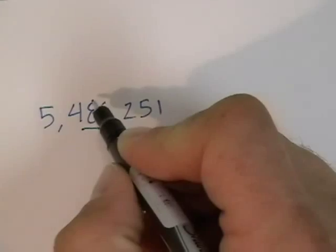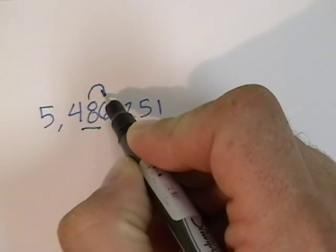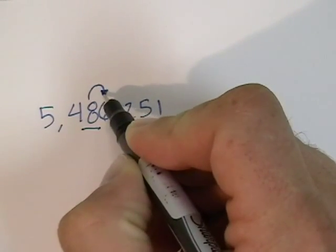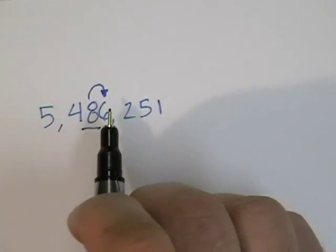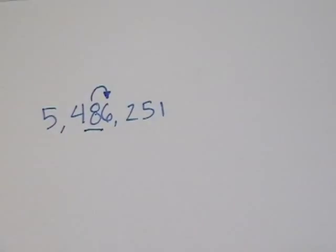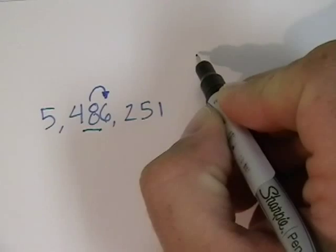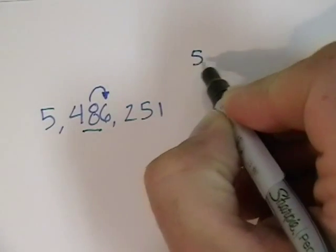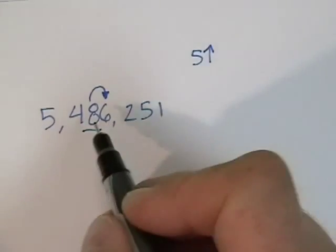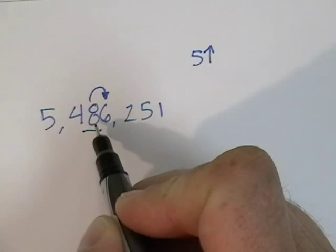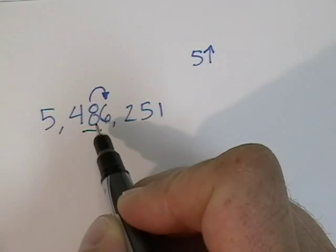Next, I look to the neighbor right next door to the ten-thousandths place. I look at this number — it's a 6. If the number is 5 or more, this 8, we add one more, so it becomes 9.